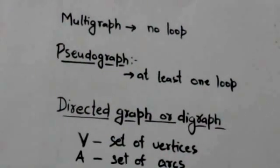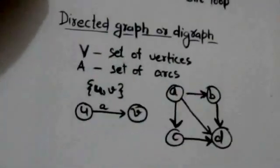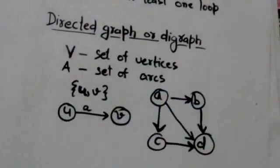A graph which doesn't have any loop is called a multigraph. A graph with at least one loop is called a pseudograph. Next is directed graph or digraph.